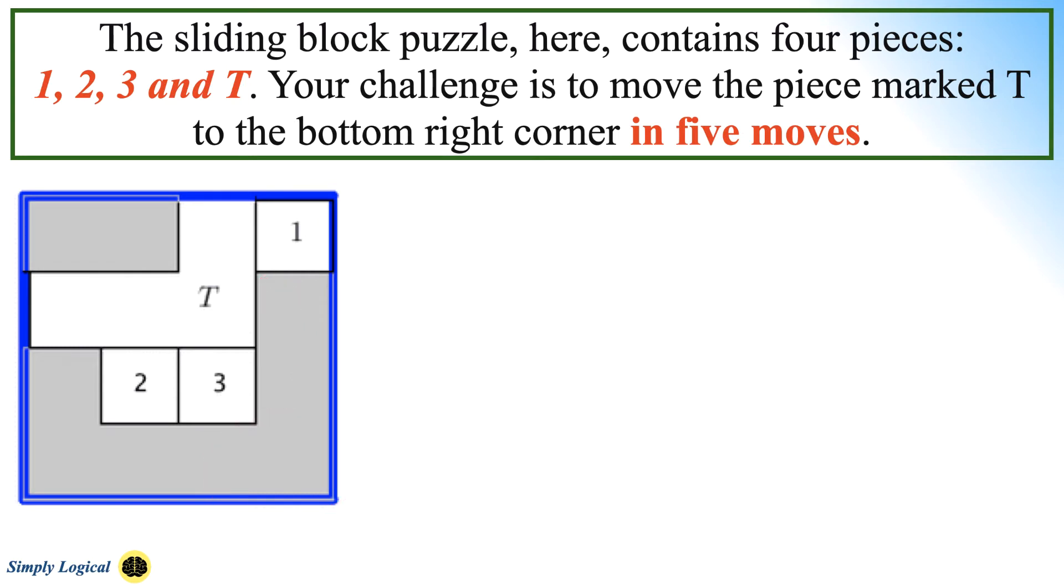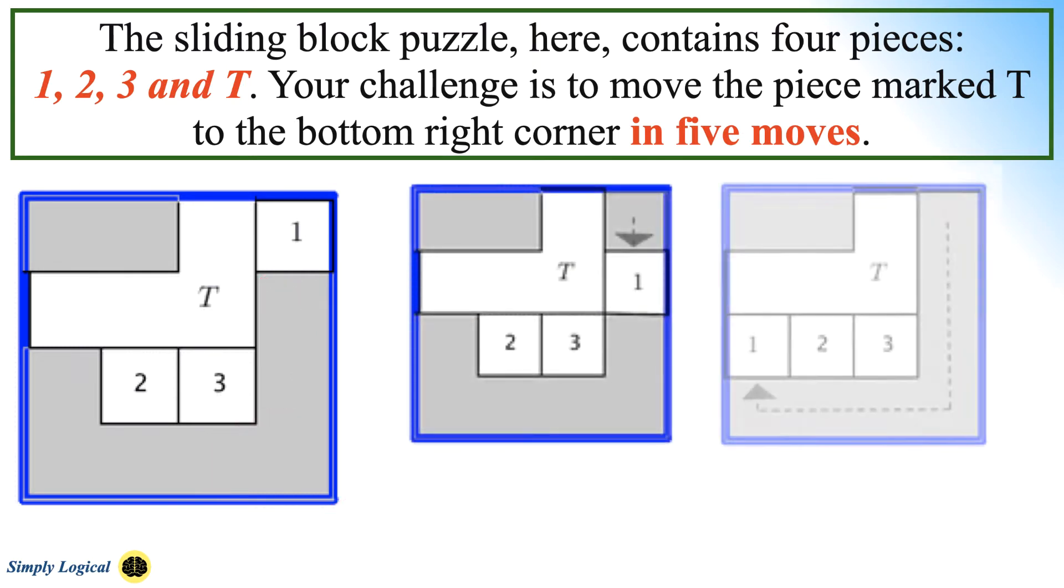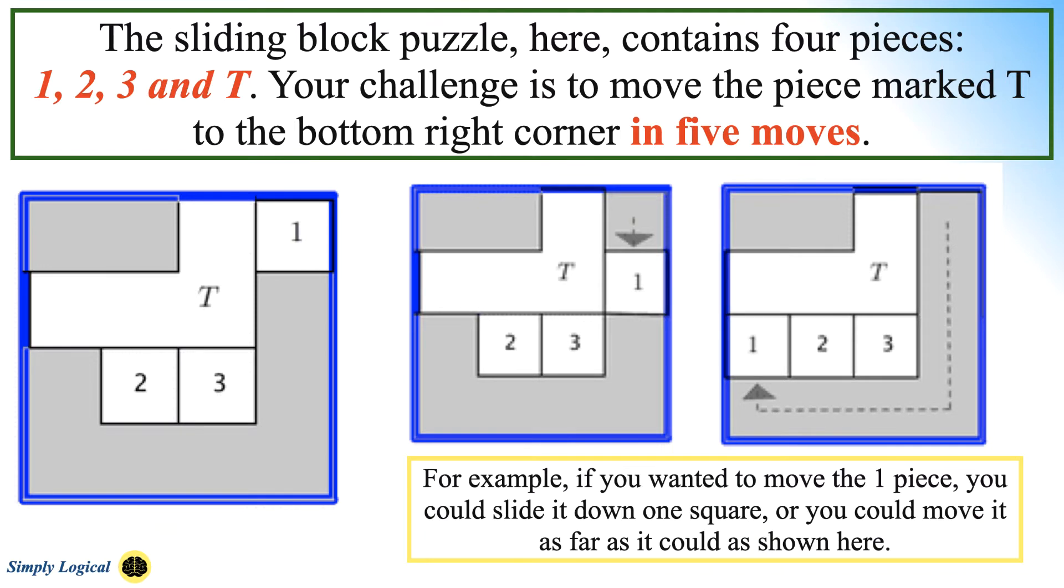A move consists of taking a piece and sliding it to a new position. For example, if you wanted to move the piece 1, you could slide it down one square as shown here, or you could move it as far as it could as shown in the second figure, or you could move it any of the other 5 available positions in between.